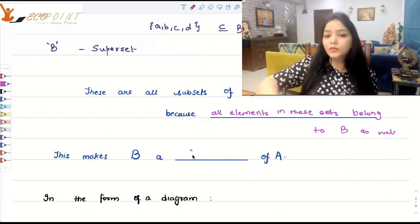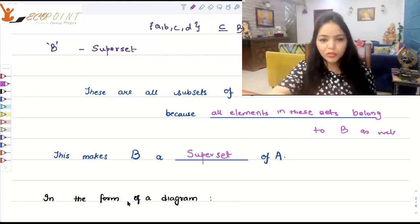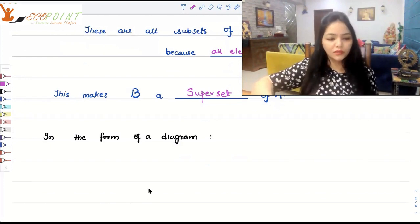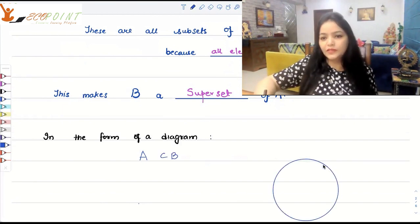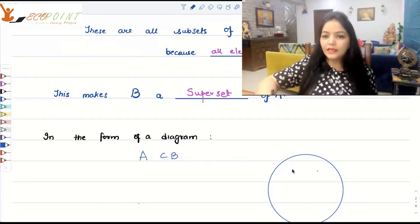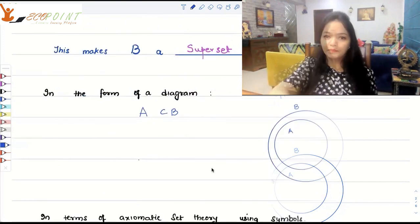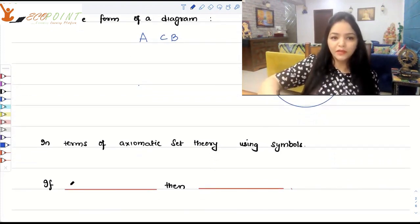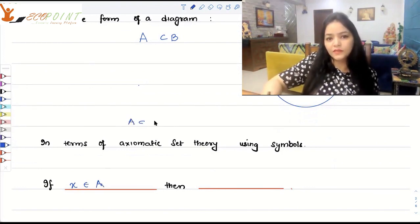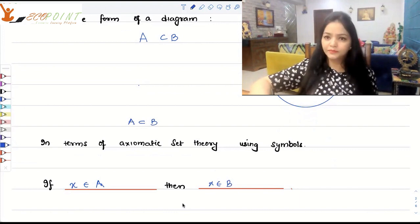This makes B a superset of A. In the form of a Venn diagram, if A is a subset of B, then B is the superset — it's the bigger one, and A is contained in B. In terms of axiomatic set theory using symbols from mathematical logic, we can say: if X belongs to A, then X belongs to B as well. It's an if-then statement.